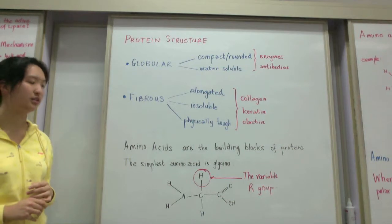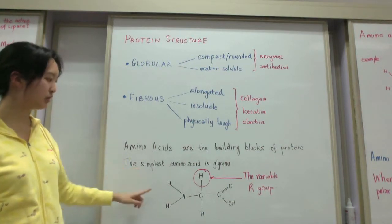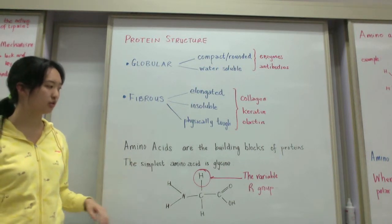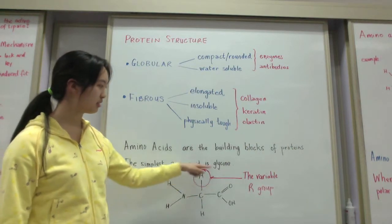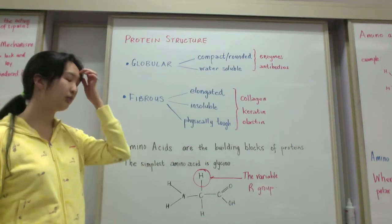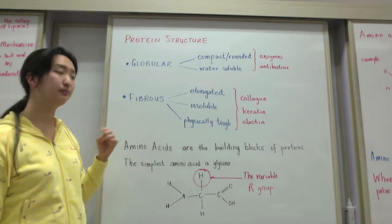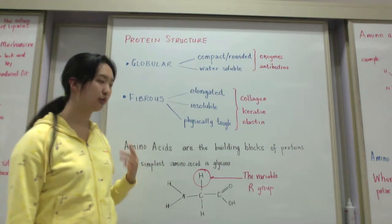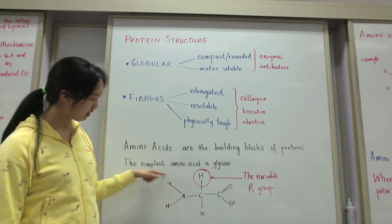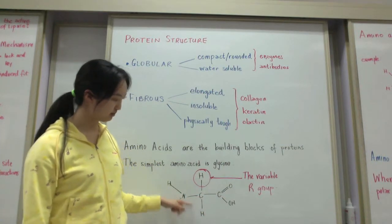The building blocks of proteins are amino acids. The simplest amino acid is glycine, and all amino acids have common structures. The only thing that varies in amino acids is the R group — glycine is just an H, but in other amino acids it could be a ring, another nitrate group, or something like that. All amino acids have an amine group, a carboxyl group, and a central carbon.